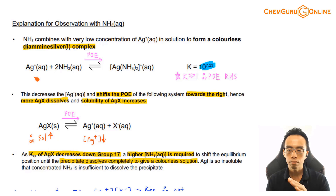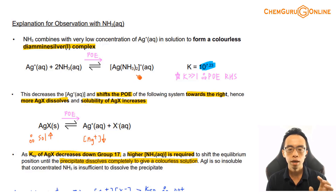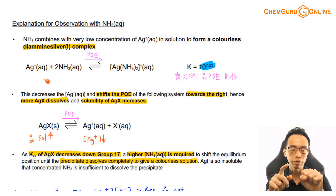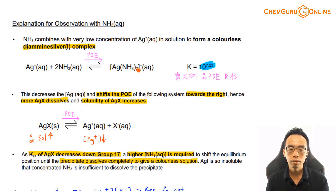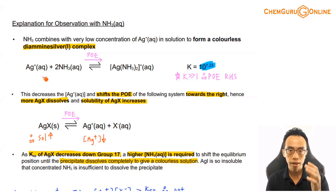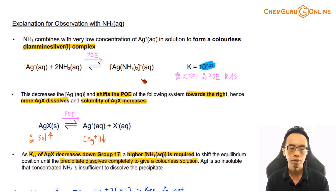Take note: Ag⁺(aq) — silver ion surrounded by water — and the diamine silver complex [Ag(NH₃)₂]⁺ — silver surrounded by ammonia — are two different species, two different complexes. This means the concentration of Ag⁺ decreases because it preferentially binds with ammonia to form the diamine silver complex.